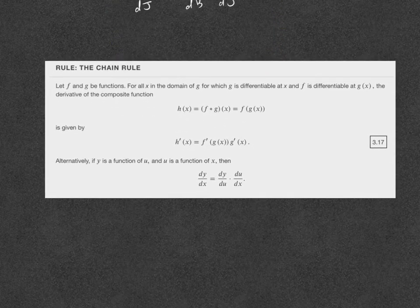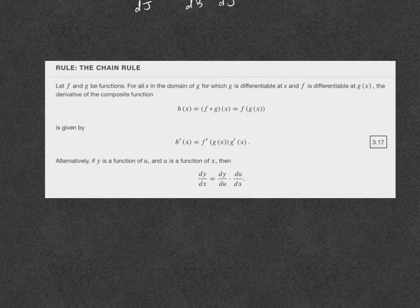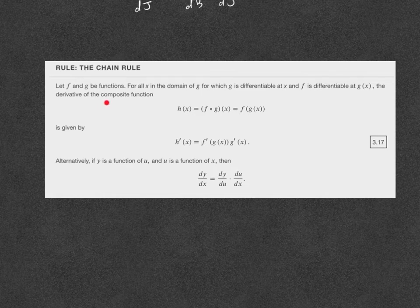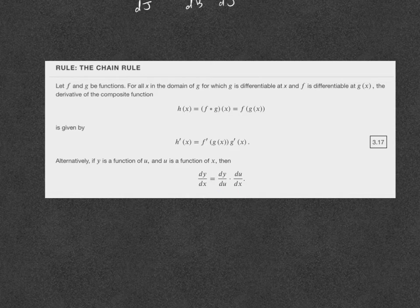Now I'm going to give you the formal notation for the chain rule. This is what I just did but with X's and Y's — this is how you will more typically see it. F and G are functions for all X in the domain of G, on which G is differentiable and F is differentiable at G of X. The derivative of their composite function — that's what the chain rule handles — is given by this formula, depending on which notation we're using. I'd hope you'll get comfortable with both.